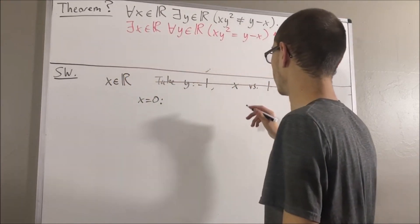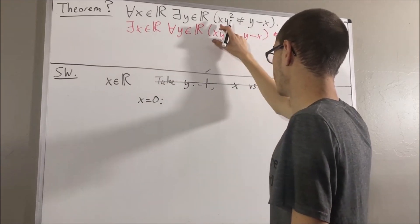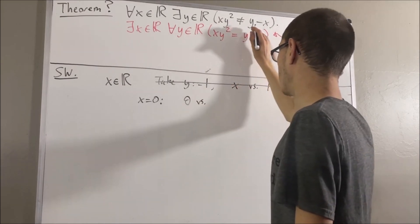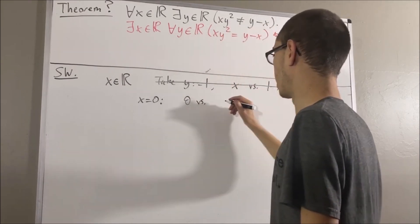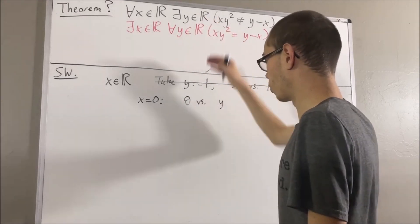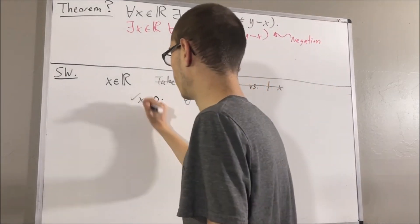In a case where x is equal to zero, well, then we have zero and zero. So we have zero versus y minus zero is y. So there exists a real number y where this is not equal to this? Of course. So that would be done.